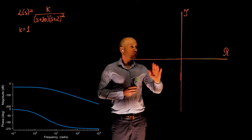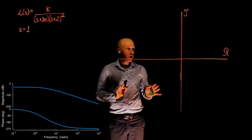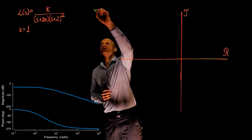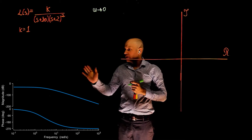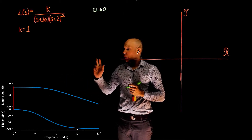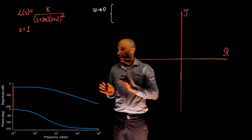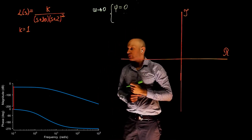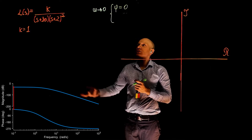So if we analyze the Bode plot properly, we should be able to come up with the Nyquist plot. Let's now look for the same strategic points we used in the previous exercises. The first one is when the frequency tends to zero. If you look at the Bode plot, we see that when the frequency tends to zero, we can identify the phase of the transfer function being at zero. For very low frequencies, the phase tends to zero.